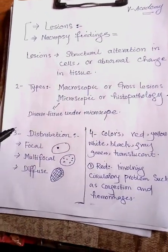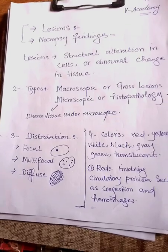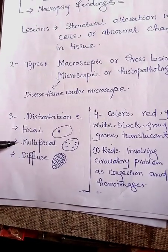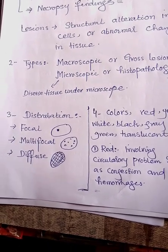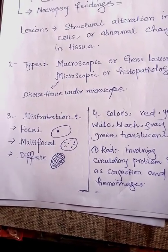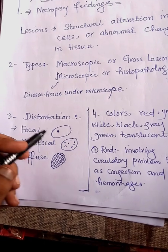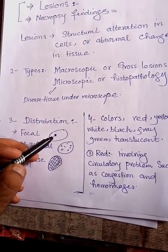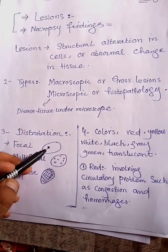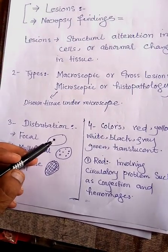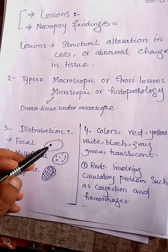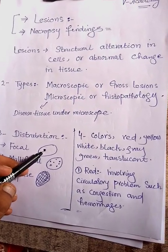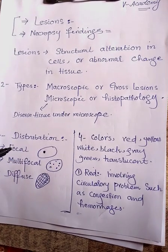Number one: focal distribution. Focal lesions have a particular area - they occur in a single area. From an MCQs point of view, this is important: focal lesions are those in which the lesion is confined to one single particular area. This is called focal distribution.